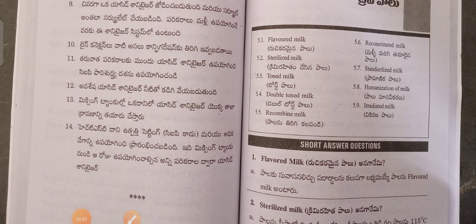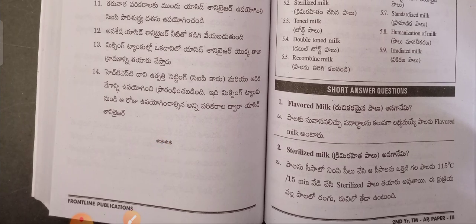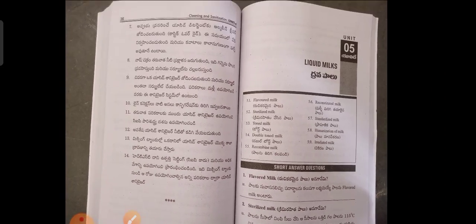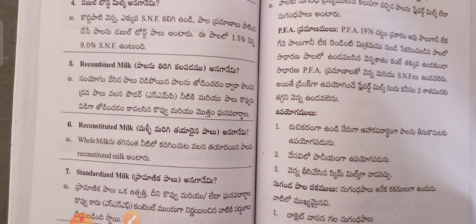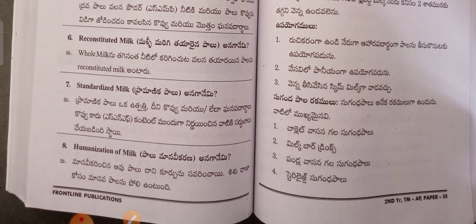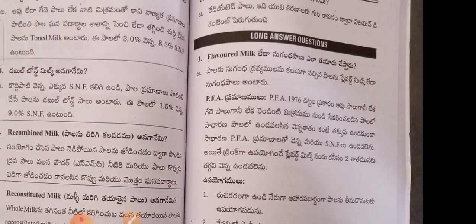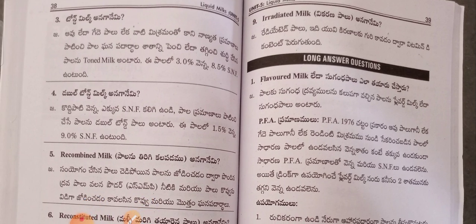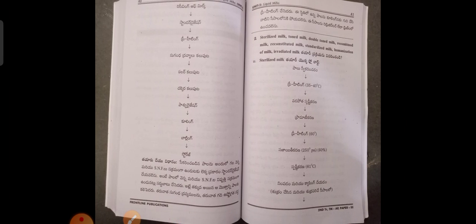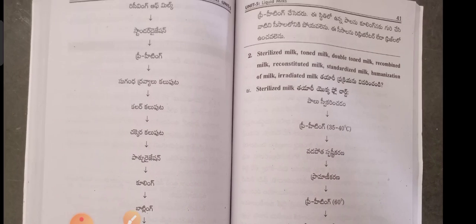Unit 5: Liquid Milk. This includes flavored milk, toned milk, canned milk, recovered milk, standardized milk, evaporated milk, and various types of flavored milk.